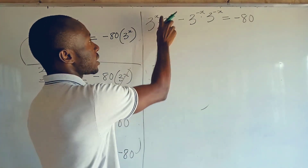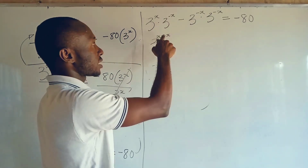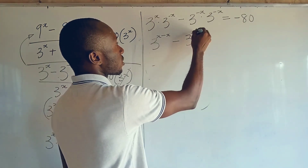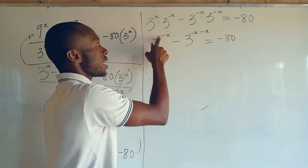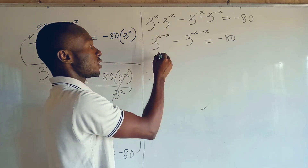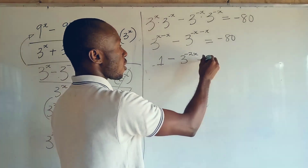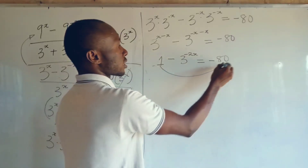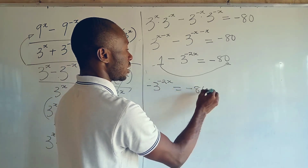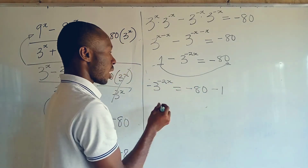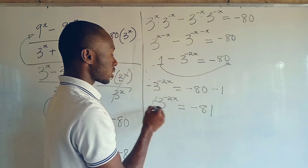By the law of indices, I add the exponents. So I have 3 to the power of x minus x — which is 3 to the power of 0 — minus 3 to the power of minus x plus minus x, which is 3 to the power of minus 2x, equal to minus 80. Since 3 to the power of 0 is 1, I have 1 minus 3 to the power of minus 2x equals minus 80. Taking 1 to the other side: minus 3 to the power of minus 2x equals minus 81.